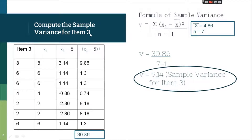It is still the same process for item 3. List down the items for item 3 and get the mean, which is 4.86, with n equal to 7. Subtract the mean from each data point to get the deviations. Then square those numbers — 3.14 squared is 9.86, and so on. Get the summation: 30.86. Substitute: 30.86 divided by 7 minus 1 gives a variance of 5.14. That is the sample variance for item 3.